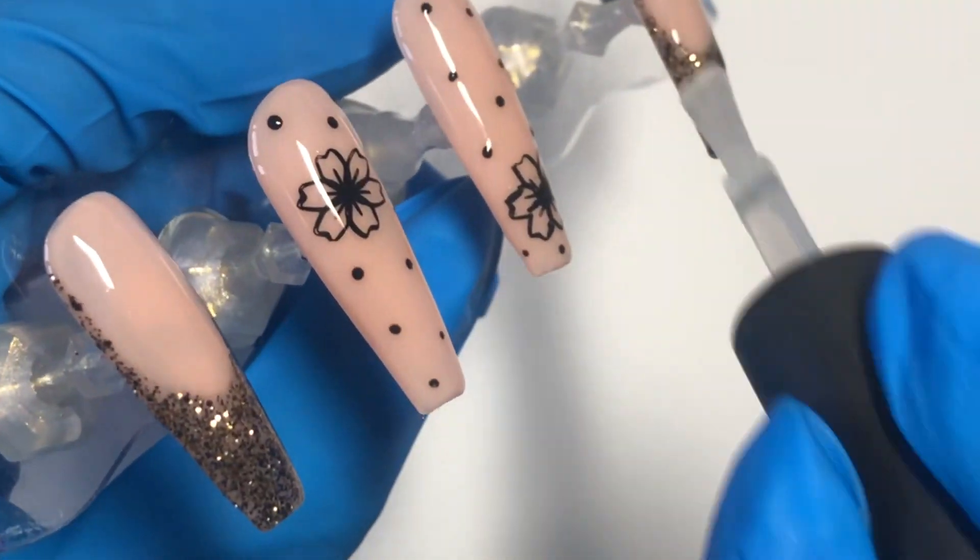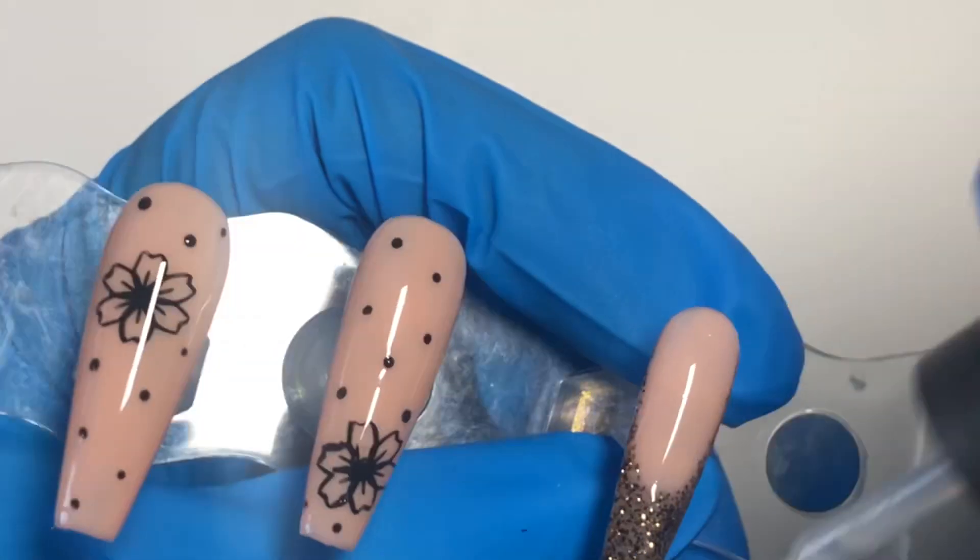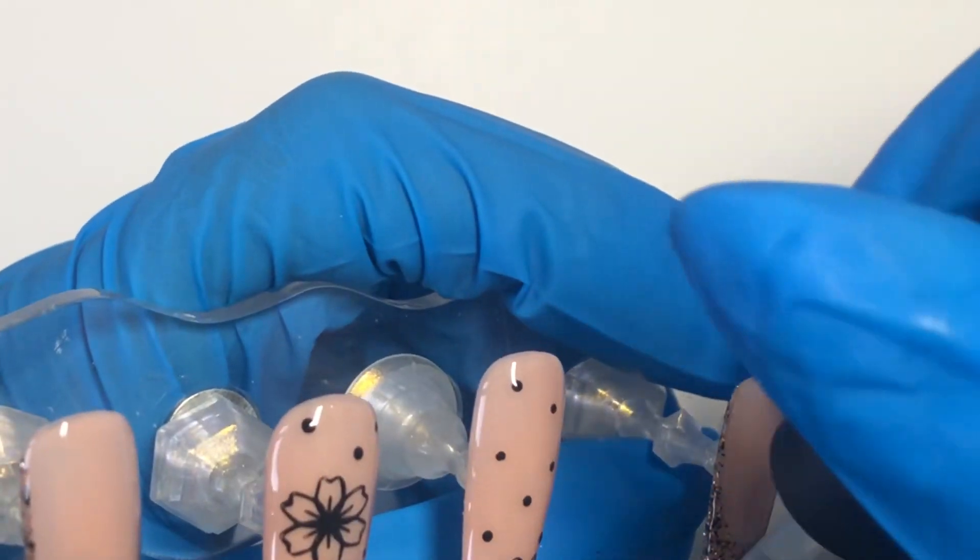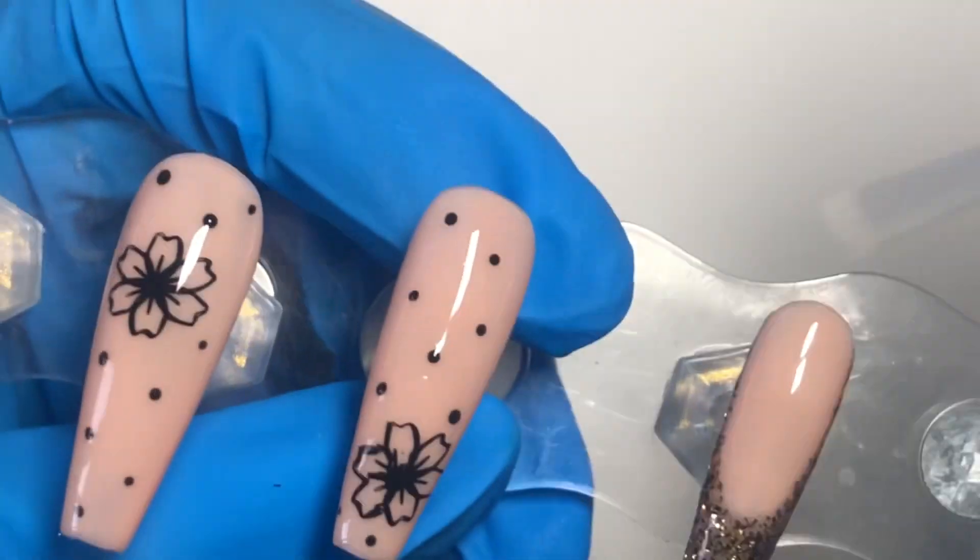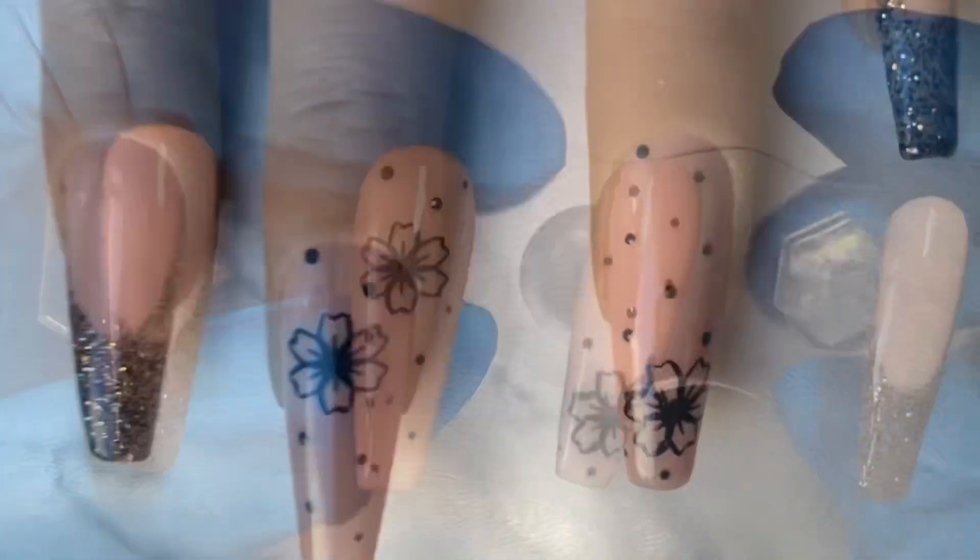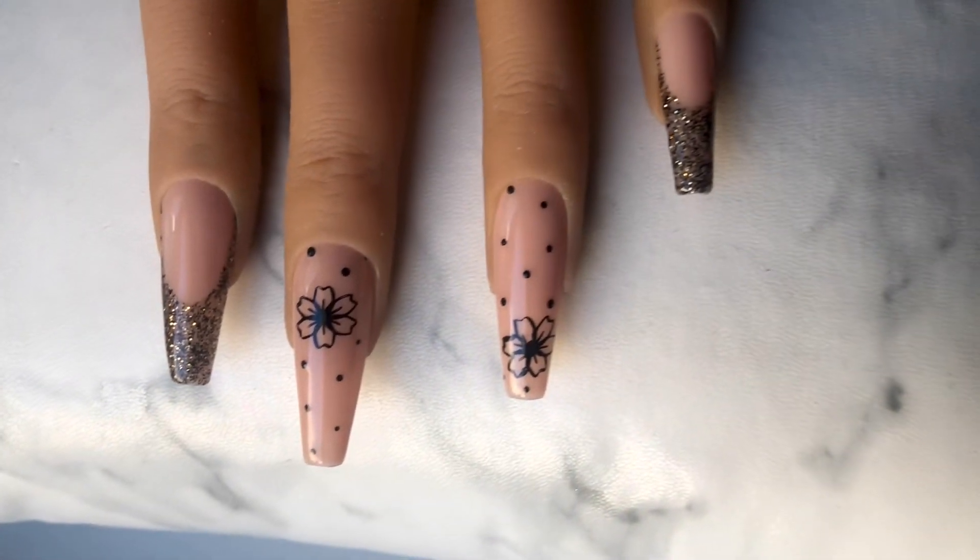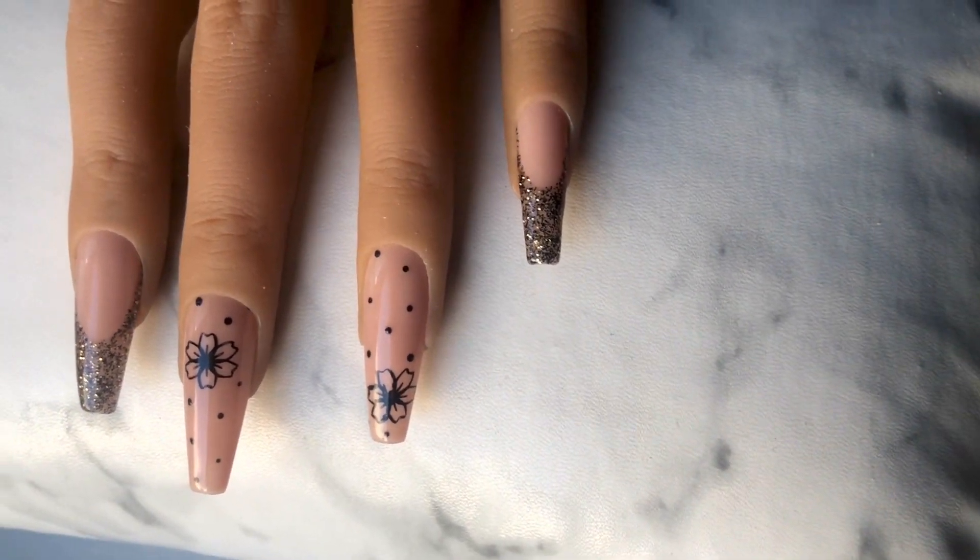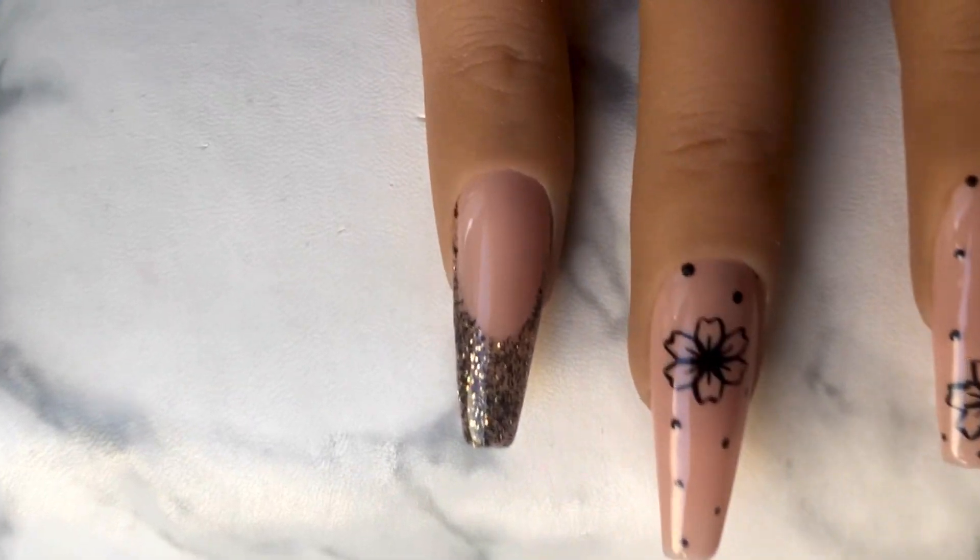I was also debating on leaving those two middle nails matte. I thought they looked lovely matte as I was going along doing them but then I decided to do everything glossy in the end. So let me know down below if you would have left these matte or not and please subscribe if you made it this far. I hope you enjoyed this nail tutorial and comment down below if you have any questions about anything I've done in this video and I'll see you in the next one.